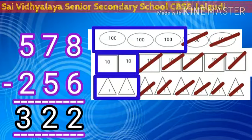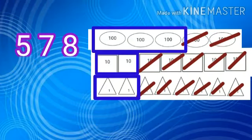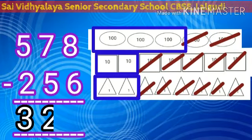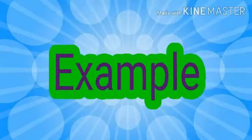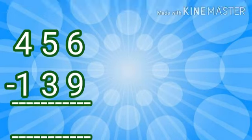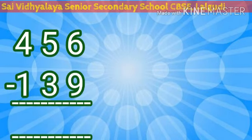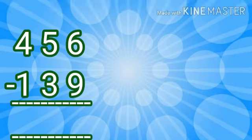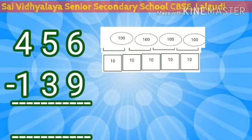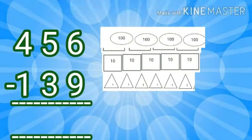Shall we see one more example? Yes — 456 minus 139. First let's write 456 in the form of cards. So we have to draw four hundred cards, five ten cards, and six one cards.